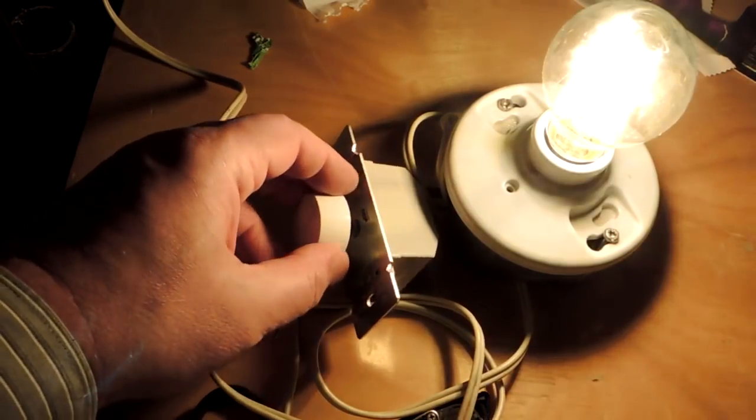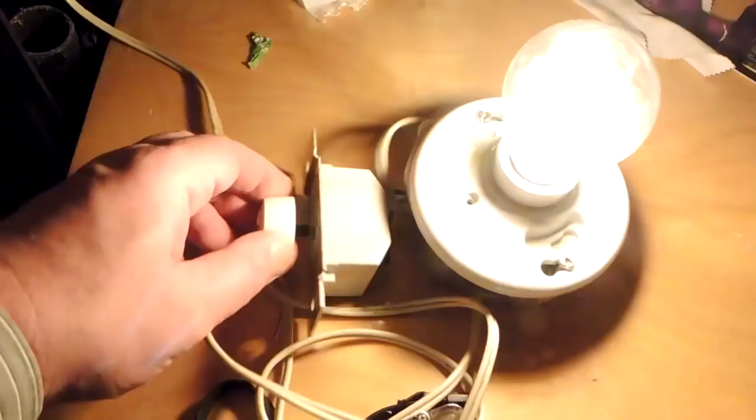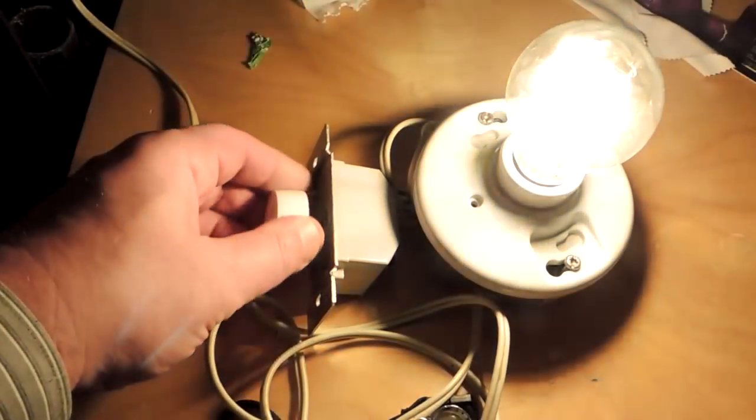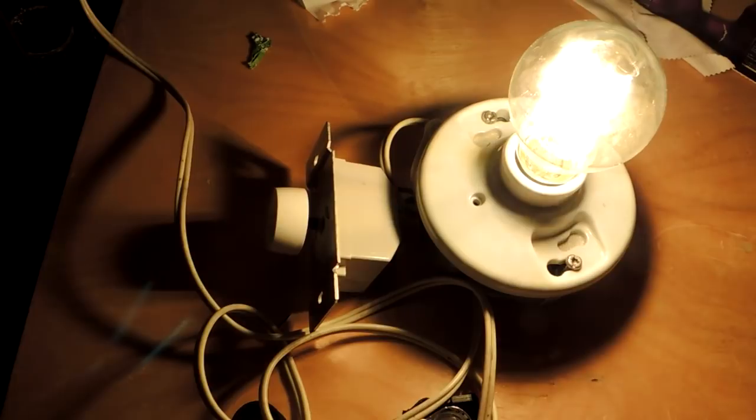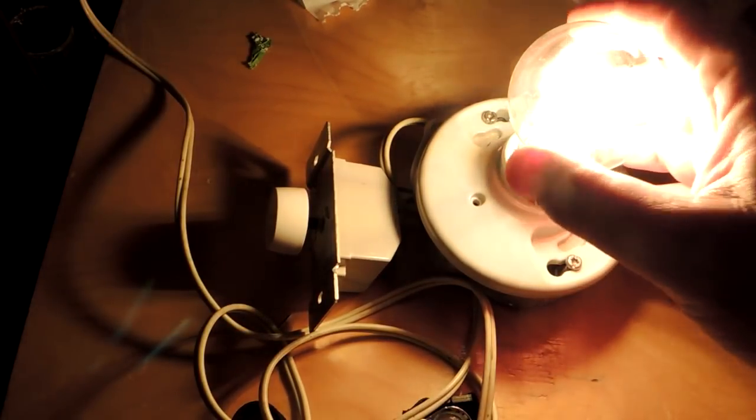The bulb claims to be dimmable and it's wonderfully dimmable. In fact, you can push it down to a very low mode here. And the camera doesn't do it justice. It's a really lovely sort of glowing light coming from the bulb. And of course, you want the full intensity. It scales up nicely. And this is definitely an old style dimmer. So it looks like this is a really nice bulb in terms of its light quality and its dimmability.